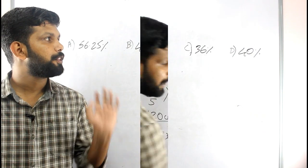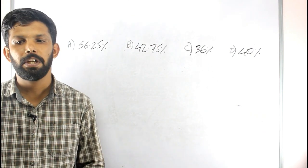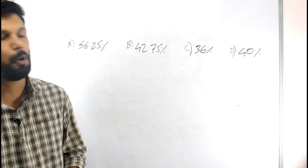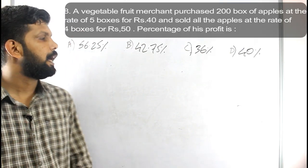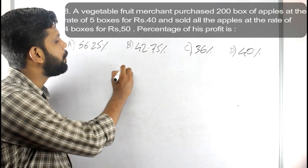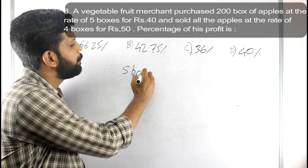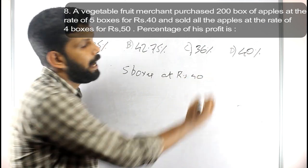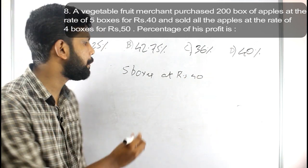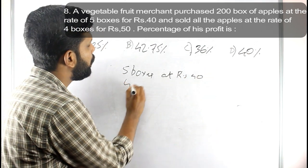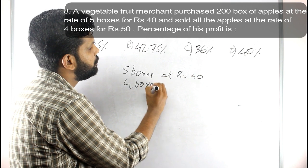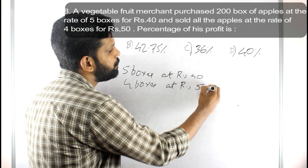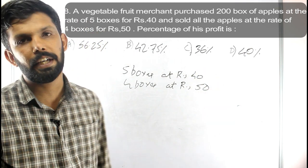The 8th question of the 2013 company board assistant exam: a vegetable fruit merchant purchased 200 boxes of apples at the rate of 5 boxes for Rs. 40, and sold all the apples at the rate of 4 boxes for Rs. 50. What is his profit percentage?